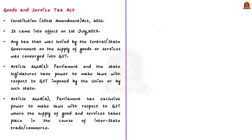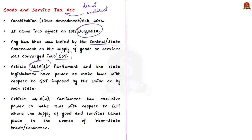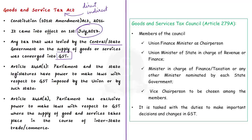We know that the government taxes in the form of direct taxes and indirect taxes. In the case of indirect taxes, the Goods and Services Tax Act was passed in parliament as the Constitution 101st Amendment Act 2016, and came into effect on 1st July 2017. After its implementation, any tax levied by the central or state government on the supply of goods or services was converged into GST. Article 279A provides for constituting a GST Council, whose members include the Union Finance Minister as chairperson, the Union Minister of State in charge of Revenue or Finance, and ministers in charge of finance or taxation nominated by each state government, with a vice-chairperson chosen among the members.